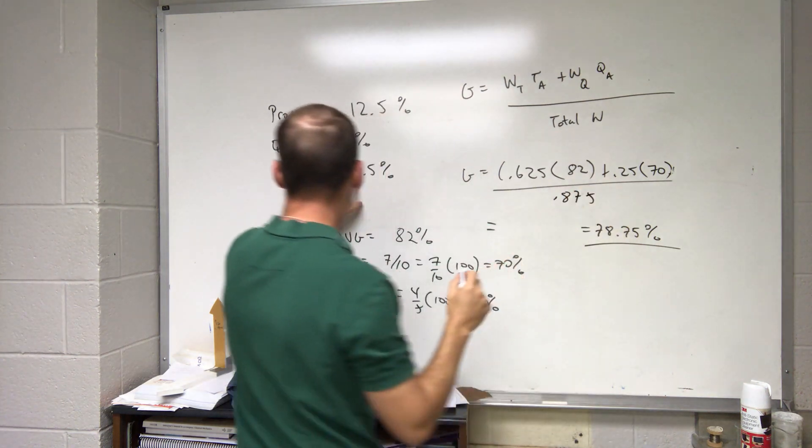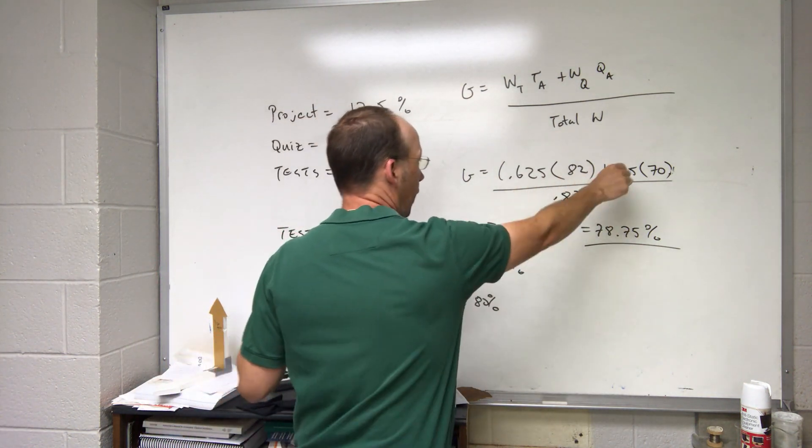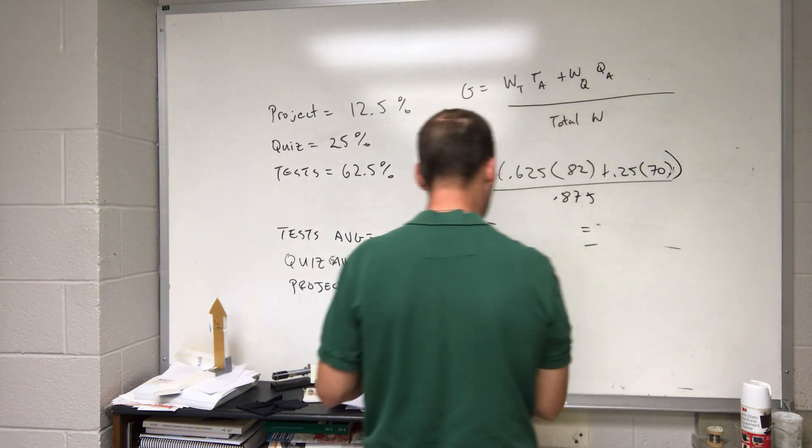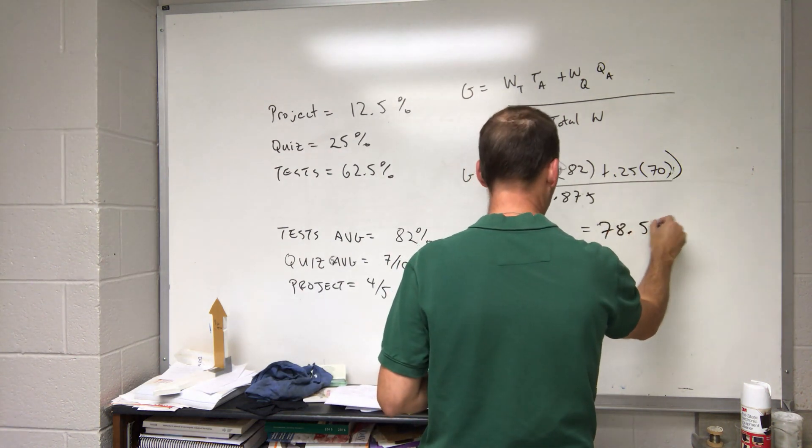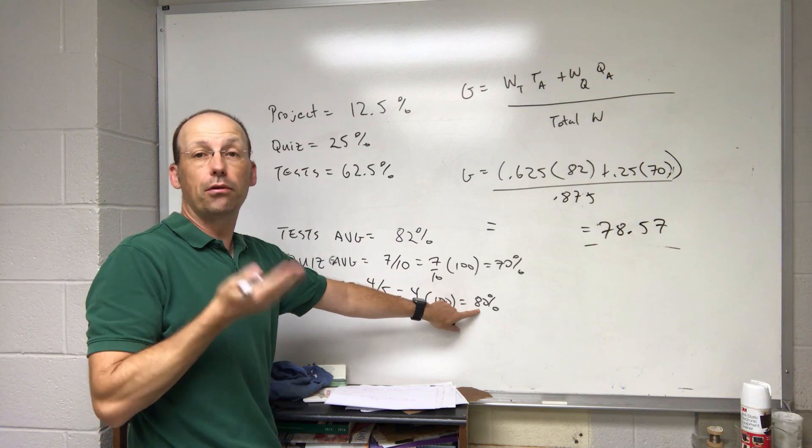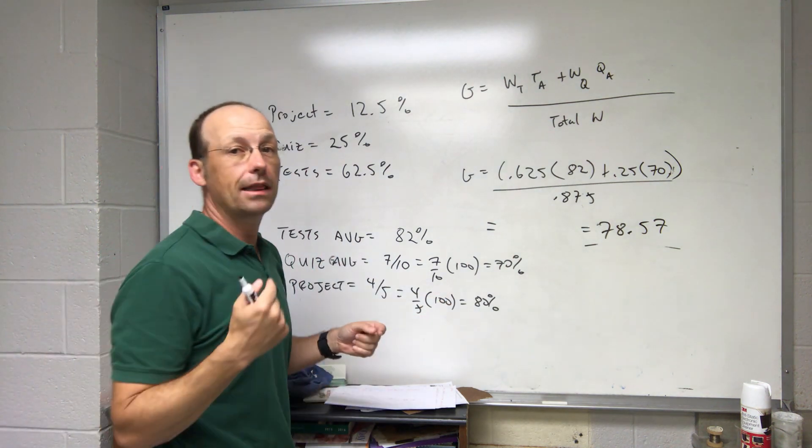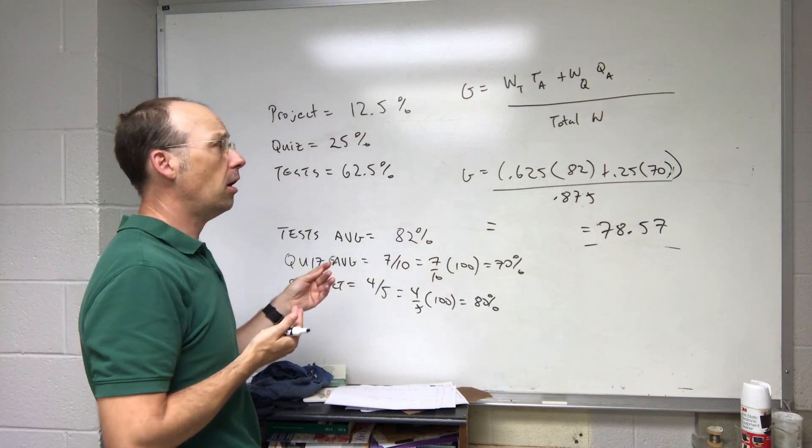And then if I add this up and divide by 0.875, I get 78.57. So it's a little bit lower because I don't have that 80% grade to boost it up a little bit, but the project wasn't worth too much anyway, so it really didn't make that big of a difference.